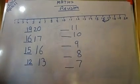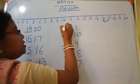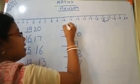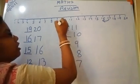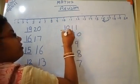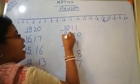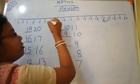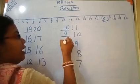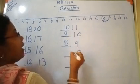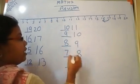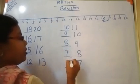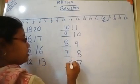11's before number will be 10. 10's before number will be 9. 9's before number will be 8. 8's before number will be 7. 7's before number will be 6.